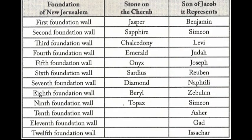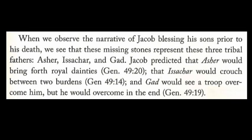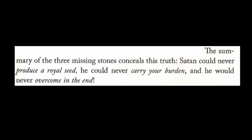Notice the chart one more time: the tenth foundation is Asher, the eleventh is Gad, the twelfth is Issachar. The mystery is why three gemstones are missing from the cherub's covering — why the high priest had 12 and the cherub only nine. When we observe Jacob blessing his sons before his death, these missing stones represent three tribal fathers. Jacob predicted that Asher would bring forth royal dainties, that Issachar would crouch between two burdens, and that Gad would see a troop overcome him but would overcome in the end. The summary of the three missing stones reveals this truth: Satan could never produce a royal seed, he could never carry your burden, and he would never overcome in the end.